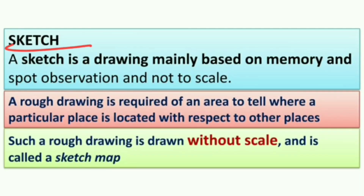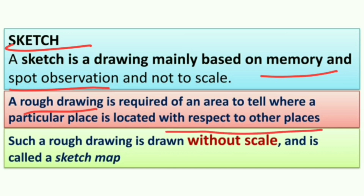What is meant by a sketch? A sketch is a drawing mainly based on memory and spot observation. It is just a rough drawing of a place or an area to show where a particular place is located with respect to other places. A sketch is a rough drawing drawn without any scale. For example, if we visited a temple or a village and were impressed by it, based on that memory and observation we can present it on paper — that is called a sketch map. No scale is considered in a sketch.